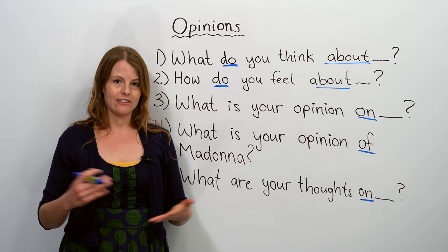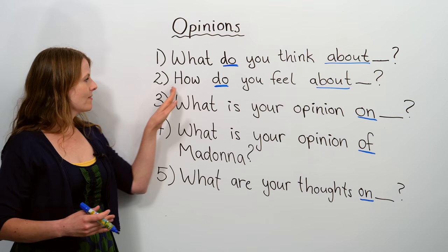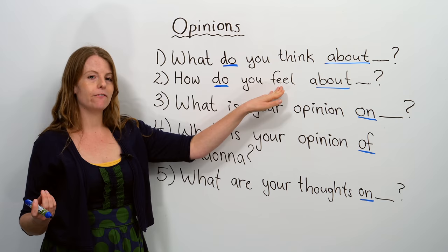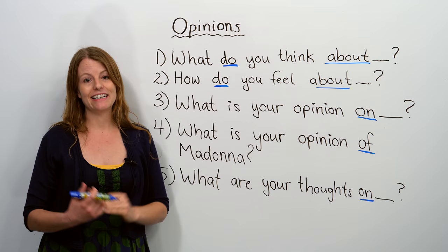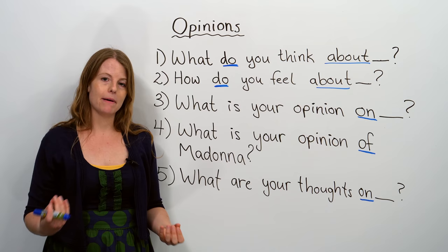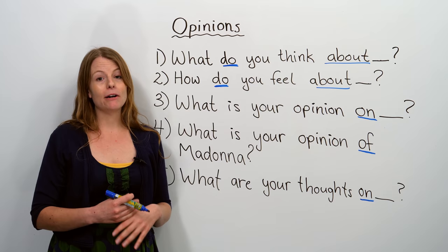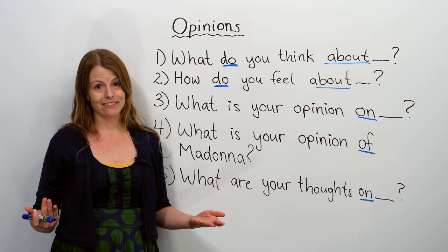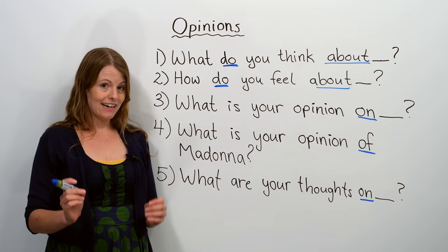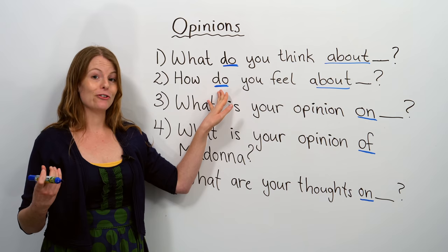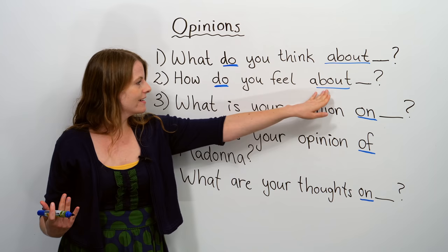Let's look at some other expressions that mean the same thing. Now we have the word how: how do you feel about? This has the same meaning as what do you think about — it's just a different way to say it. We can say, how do you feel about your country? How do you feel about the environment? How do you feel about children today? These are different ways to ask someone for their opinion. Notice I've underlined the word do — please don't forget the word do when you're asking this question. And again, we have about as the preposition in this question.